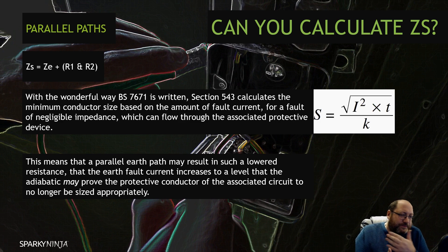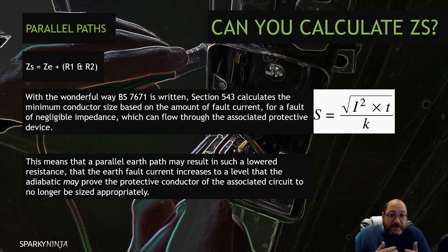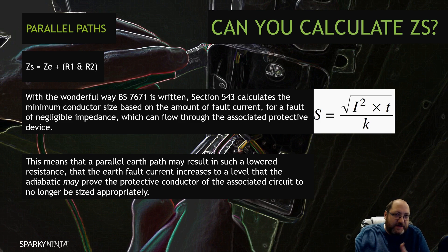It might be that a parallel has resulted in your protective conductor being too small all of a sudden — just a knock-on effect. If you calculate without measuring, you're not going to find any of this information out. It could be that you calculate something, install it, and the protective conductor is now undersized — under an earth fault condition there is thermal constraint and it gets damaged.